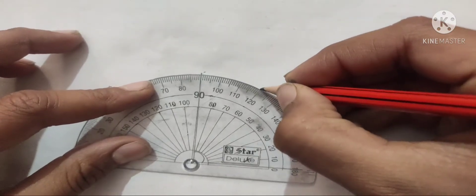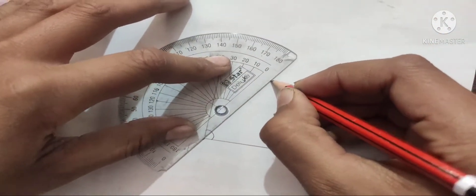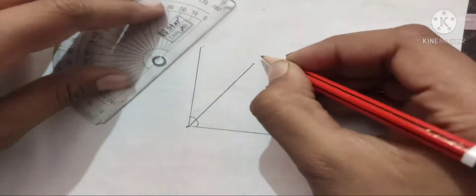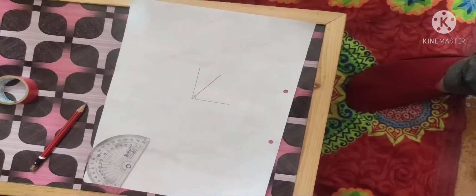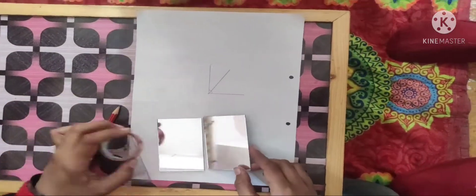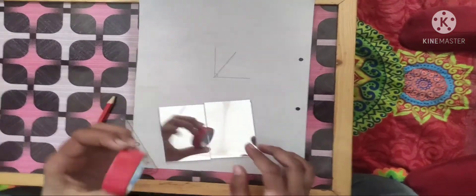To make a 60 degree angle, now we have to join the two mirrors with the help of the tape.